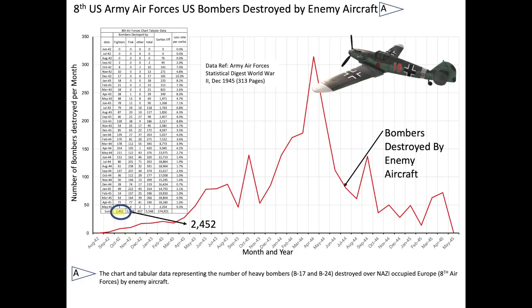A total of 2,452 8th Army Air Force B-17s and B-24 bombers were destroyed by enemy aircraft. We now have the denominator value to attain a kill ratio. An enemy aircraft will be considered destroyed if the following is observed, based on this declassified June 1945 report: the enemy aircraft has been seen to crash, disintegrate in the air, or be enveloped by flames, captured in friendly territory, or the pilot bailed out.